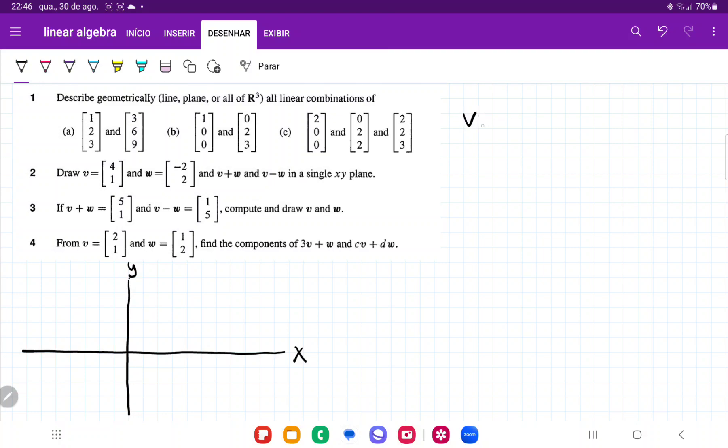So we have that v is going to be equal to the vector [4, 1]. We have that w is equal to the vector [-2, 2].